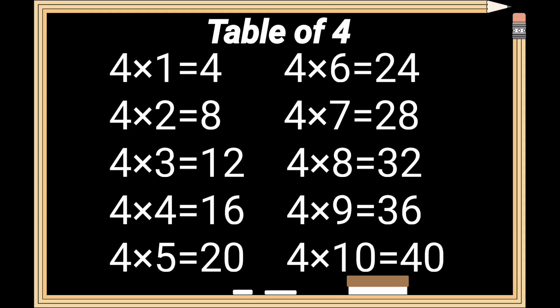Table of 4 review. 4 times 1 is 4. 4 times 2 is 8. 4 times 3 is 12. 4 times 4 is 16. 4 times 5 is 20. 4 times 6 is 24. 4 times 7 is 28. 4 times 8 is 32. 4 times 9 is 36. 4 times 10 is 40.